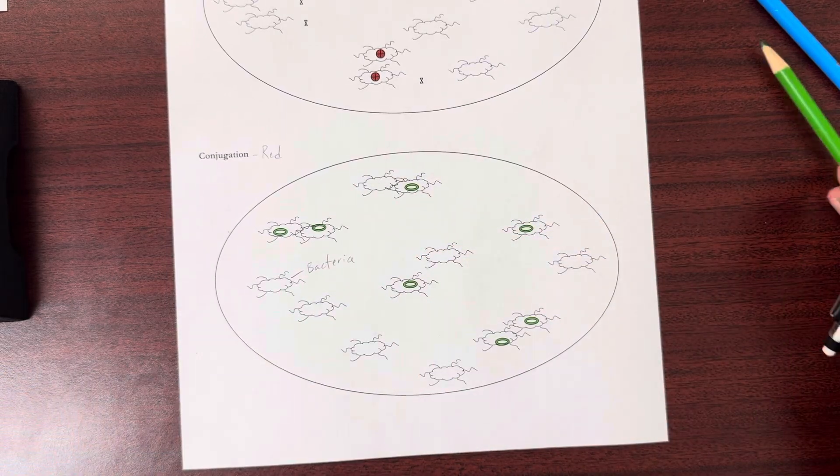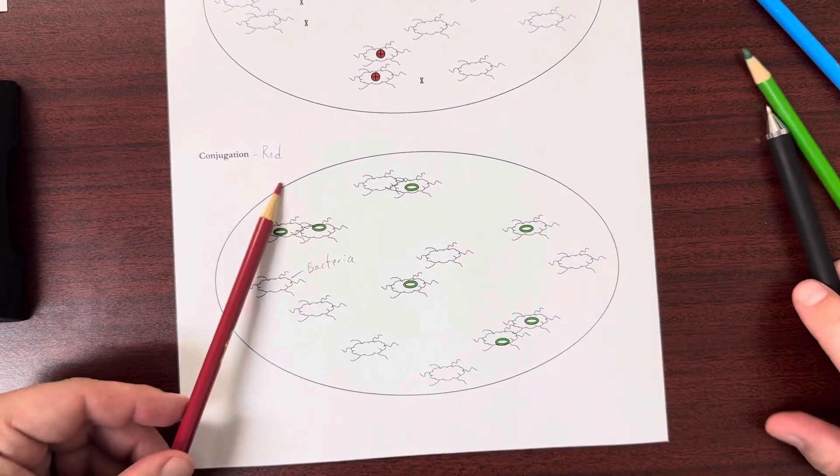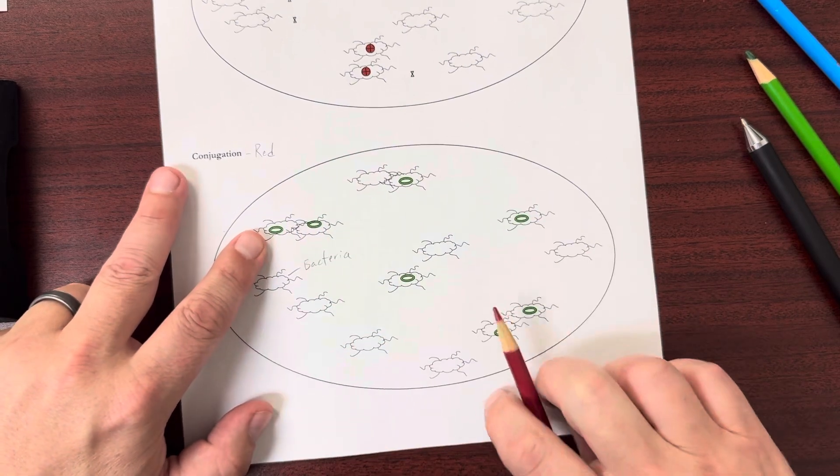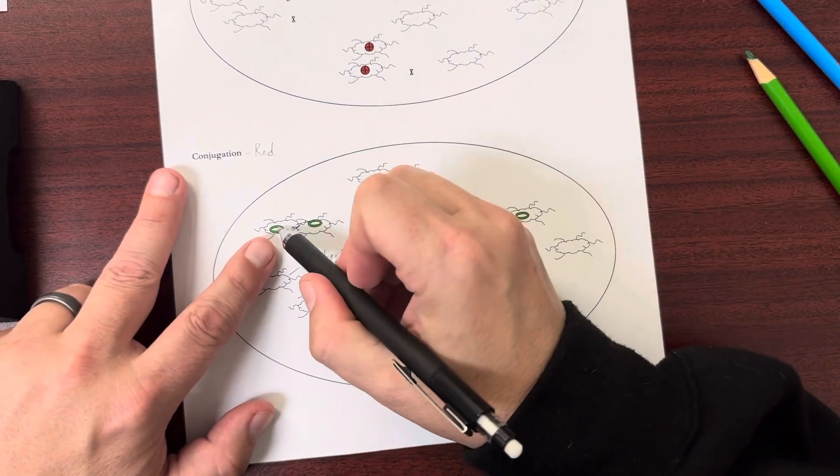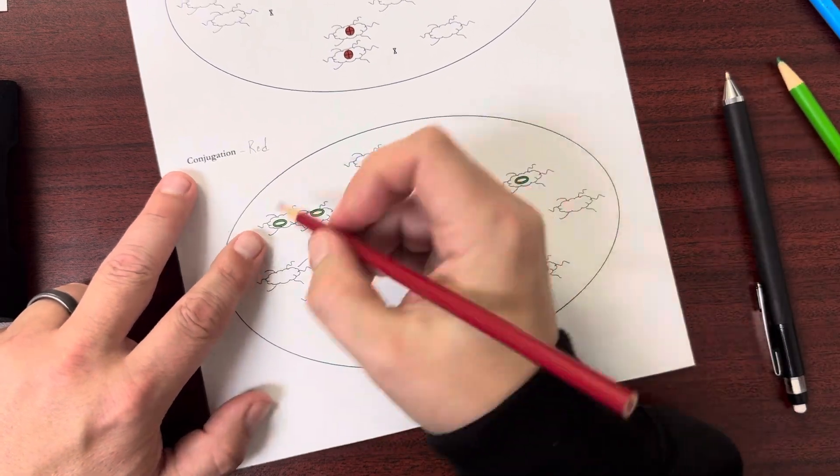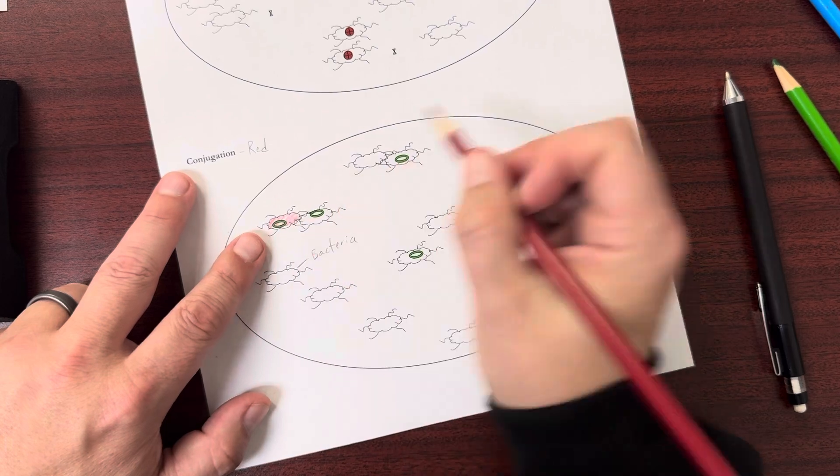So in red, I'm going to color in the ones that have this new gene. So that new gene that swapped, that swapped out genes, that's this green circle here. So I know this one went through conjugation.